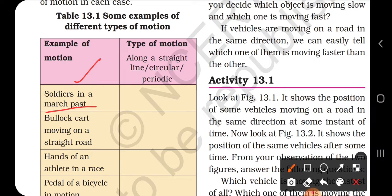What type of motion is this? You would call it straight line motion. Bullock cart moving on a straight road - that's straight motion. Hands of an athlete in a race - what type of motion is that? Periodic motion.